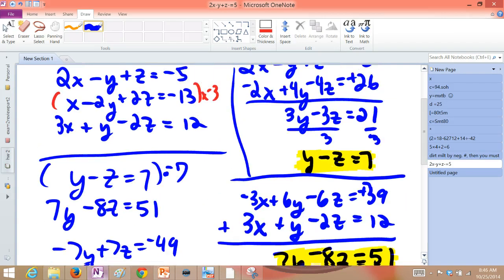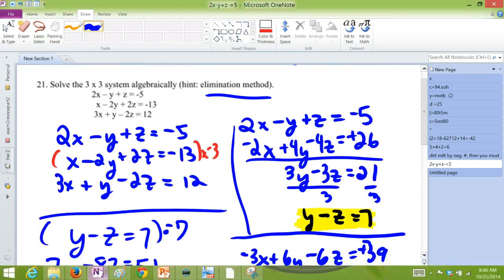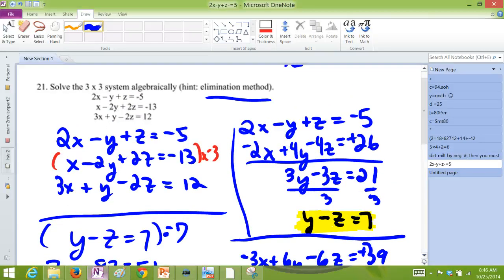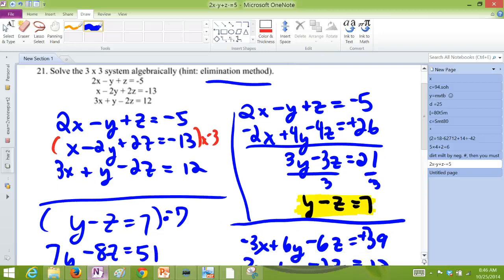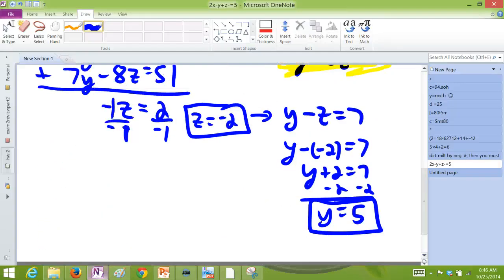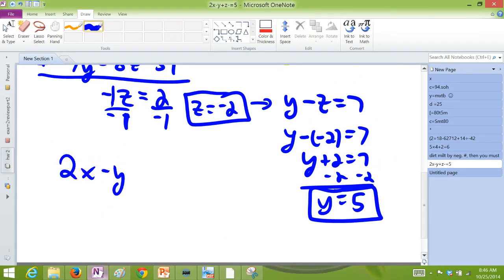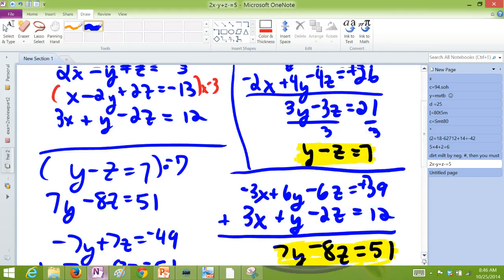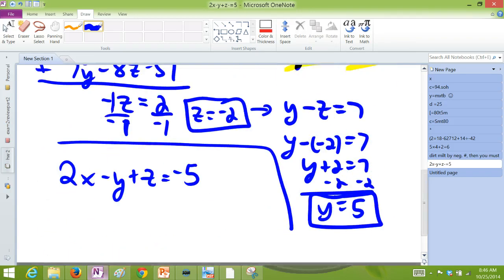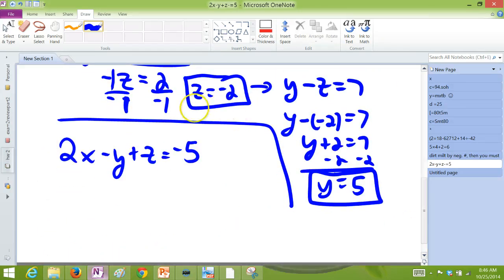Go back into either of the original equations and solve for x. Let's take the first one. 2x minus y plus z is negative 5. 2x minus y plus z is negative 5. Let me double check what I have there. 2x minus y plus z is negative 5. Okay, looks good.